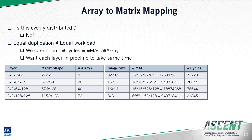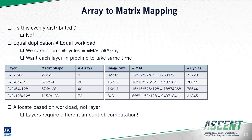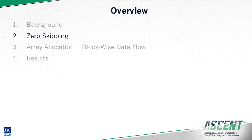We find that even though we evenly distribute our arrays amongst the layers, we have not evenly distributed the workload. Computing the total number of cycles required for each layer, we find that layer 4 takes a quarter of the time of the other layers while using more than half the arrays in our hardware. Hence, we must allocate arrays based on workload, not by evenly copying each layer. We have now made it through the background section. Next, we will quickly go through the zero-skipping readout technique.